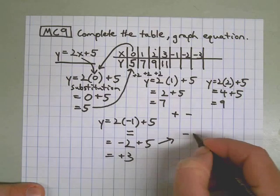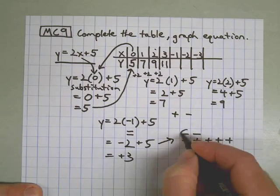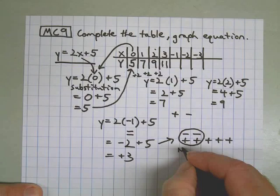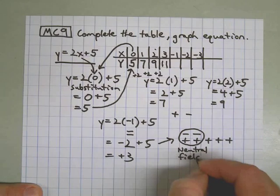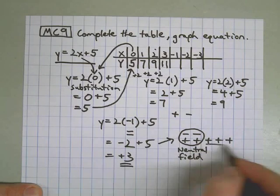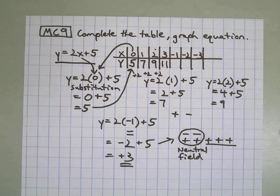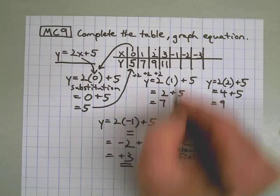Plus 5 gives me a positive 3. Once again, if you remember, we have 2 negatives and 5 positives. This is a neutral field, which means it equals 0. Draw the 0 around it and what I have left is the answer. So in case you forgot how to work with negative and positive integers coming up with a sum that is adding 2 or more of them, that's one way to do it. You can draw these on your paper anytime you want. So for the negative 1, I have a value of positive 3.